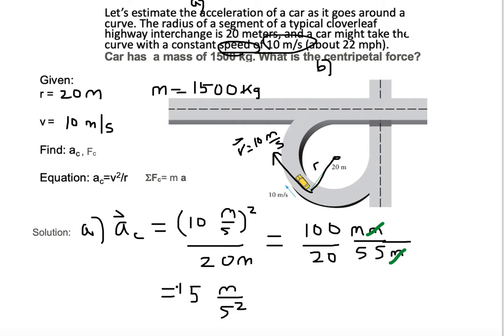We have a positive value here for centripetal acceleration. So we need to put a direction in here. So our direction for centripetal acceleration is towards the center of the circle. I'm just going to say towards center.